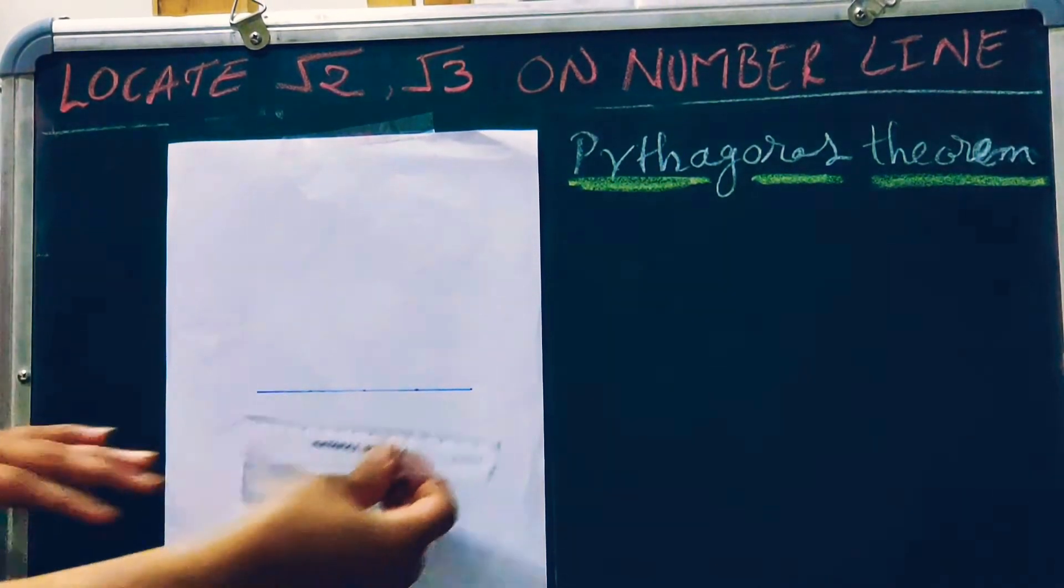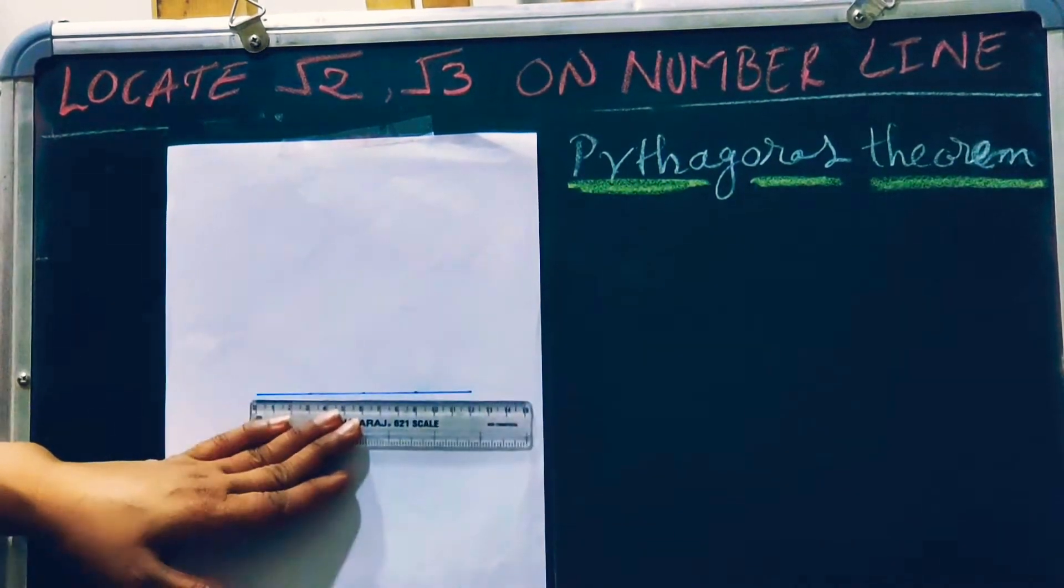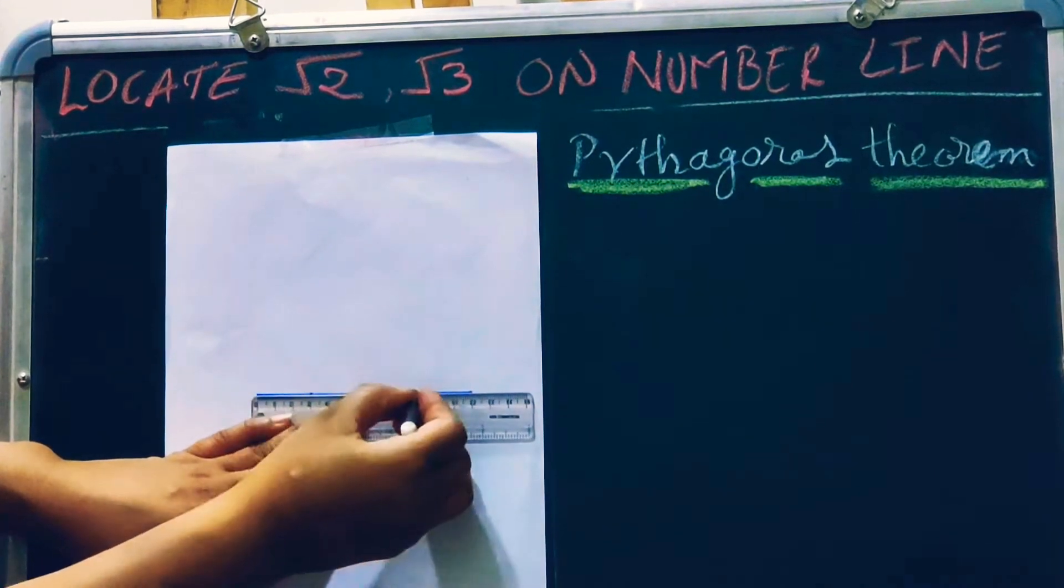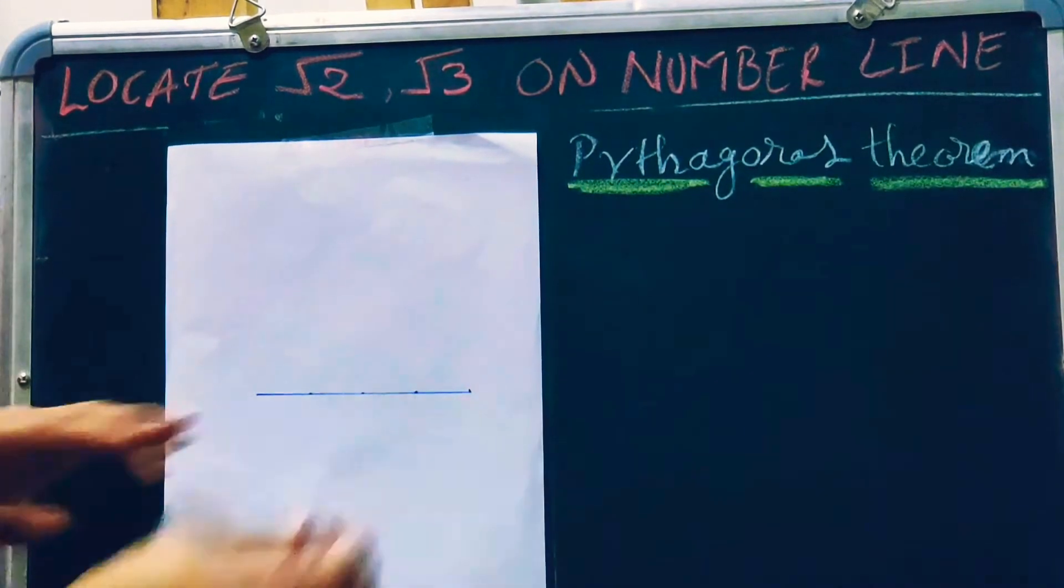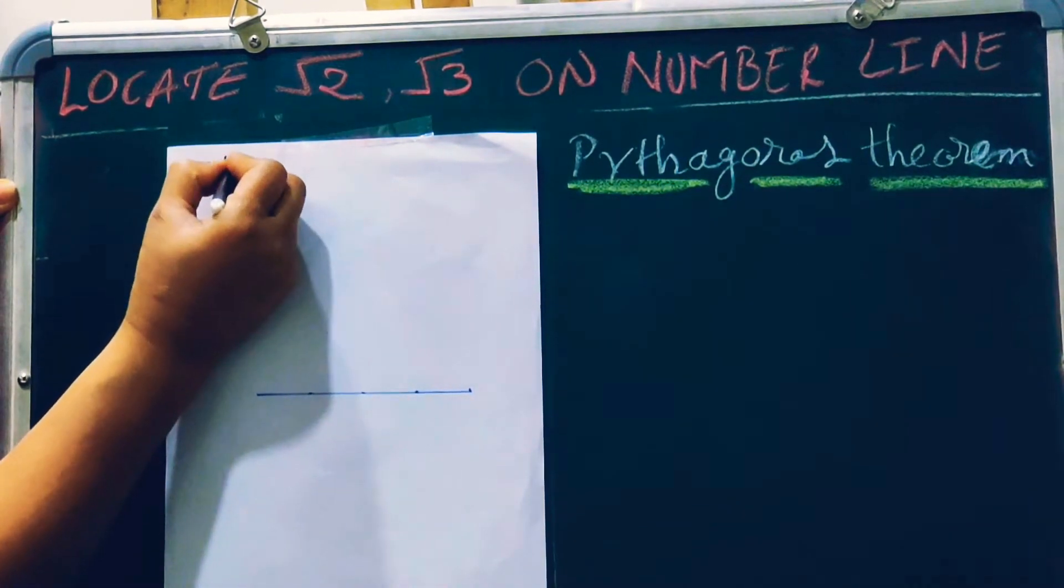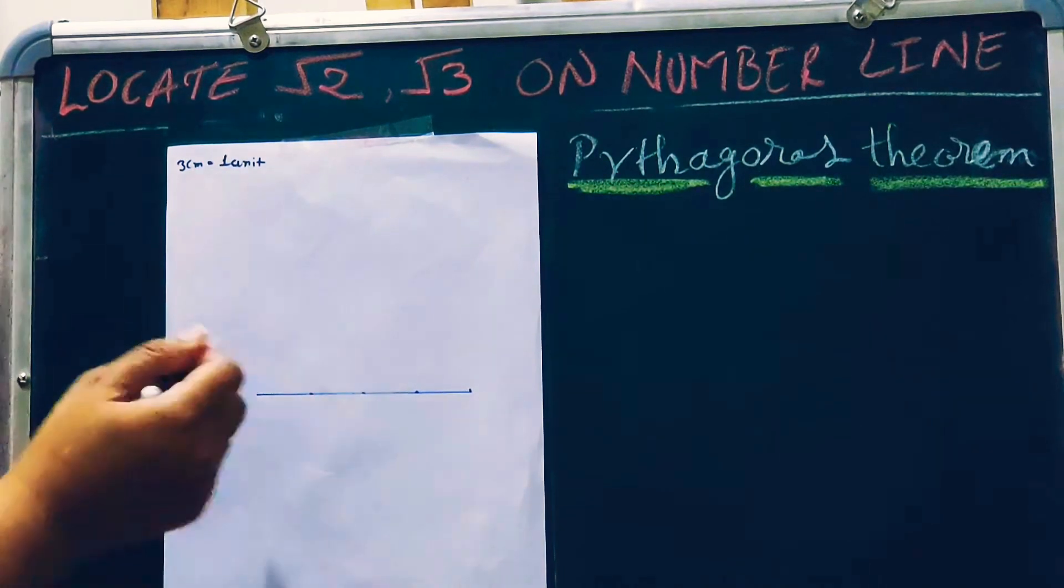First, we will make a line and mark some points at equal distances. Here, I took 3 cm as 1 unit. You can take anything, 2 cm equal to 1 unit, it will work.